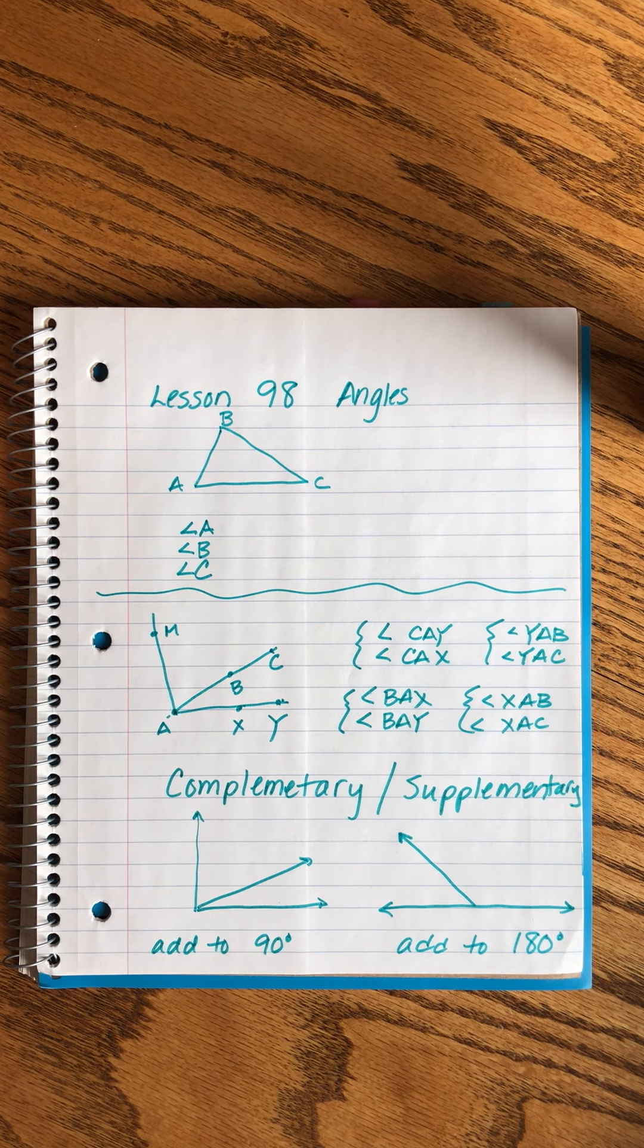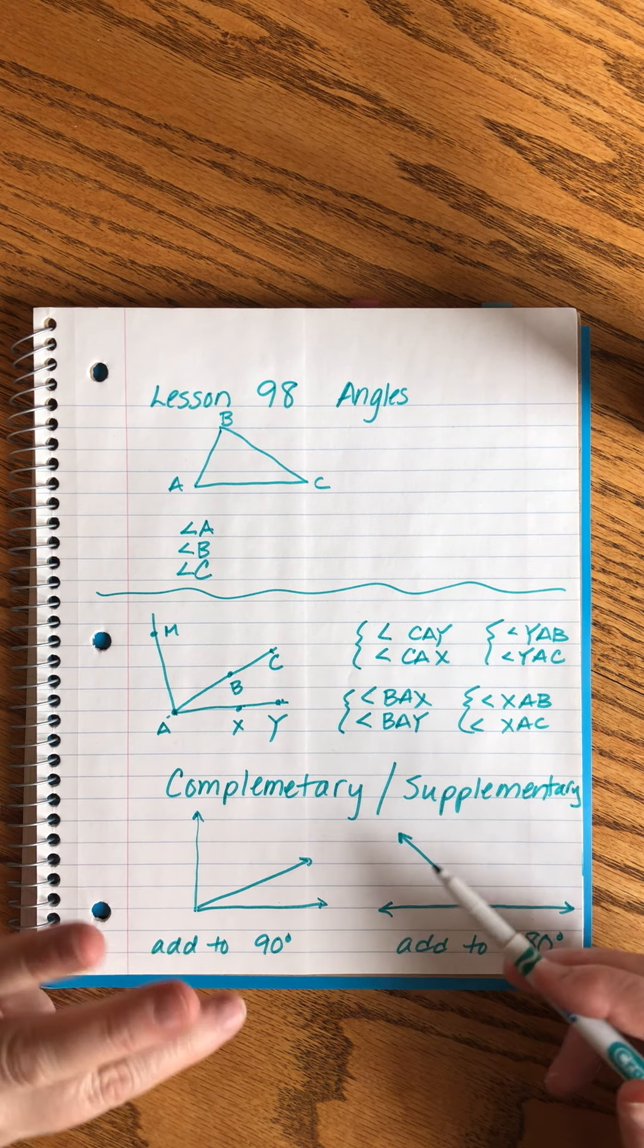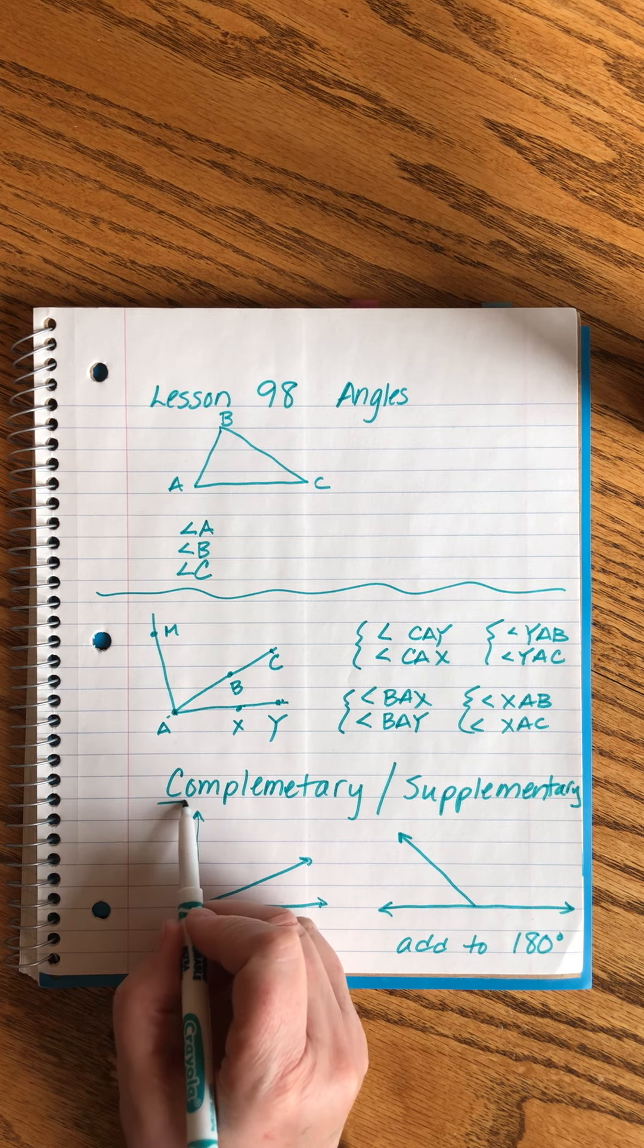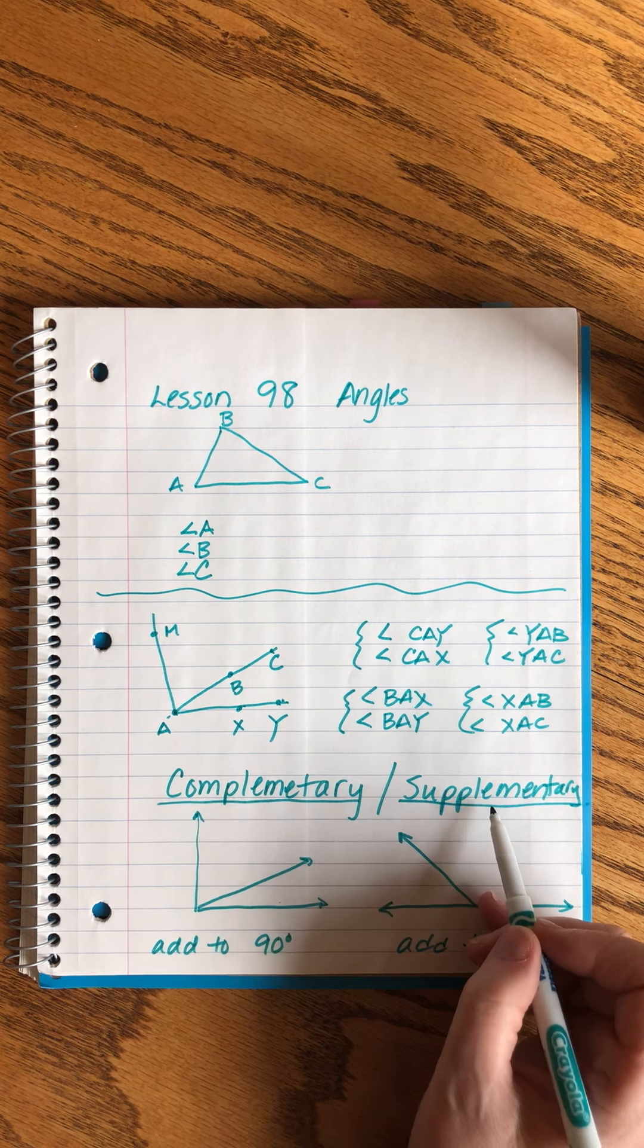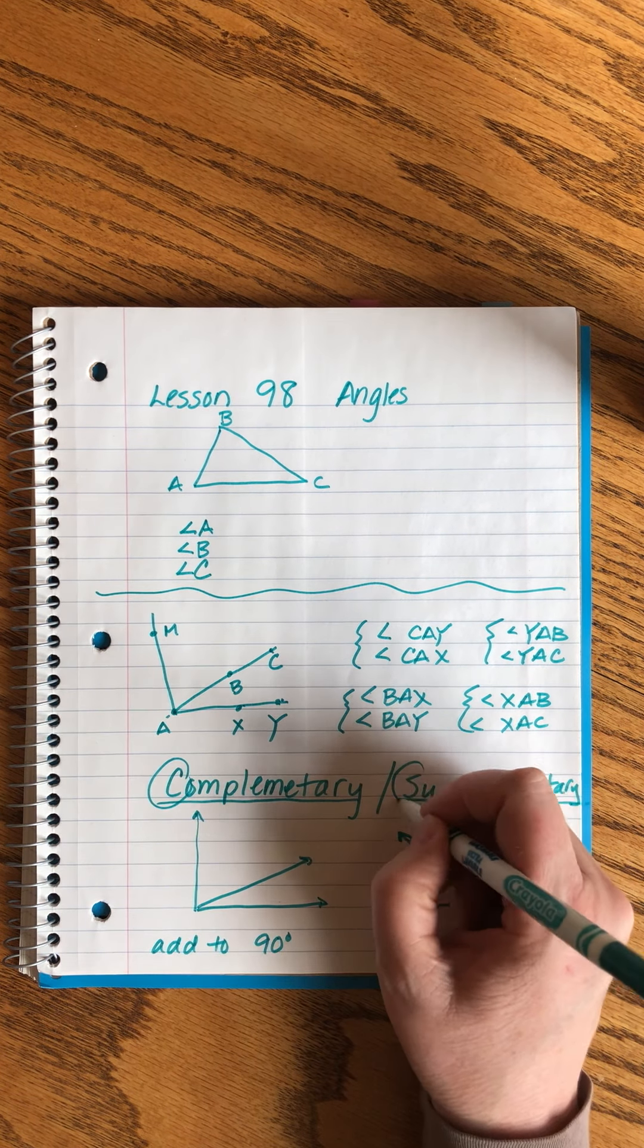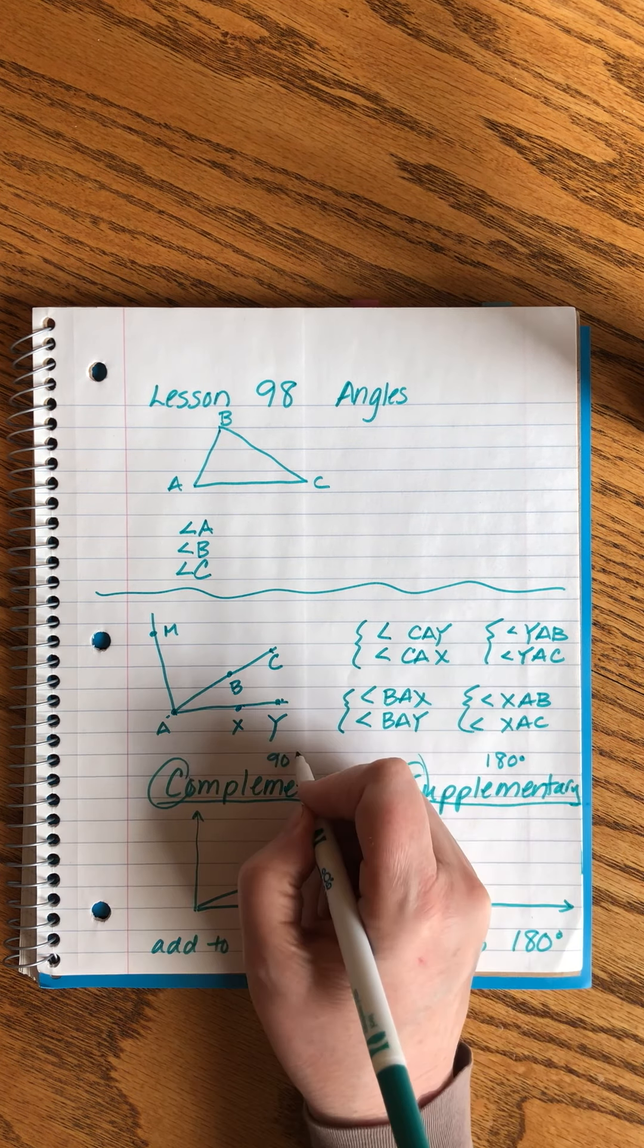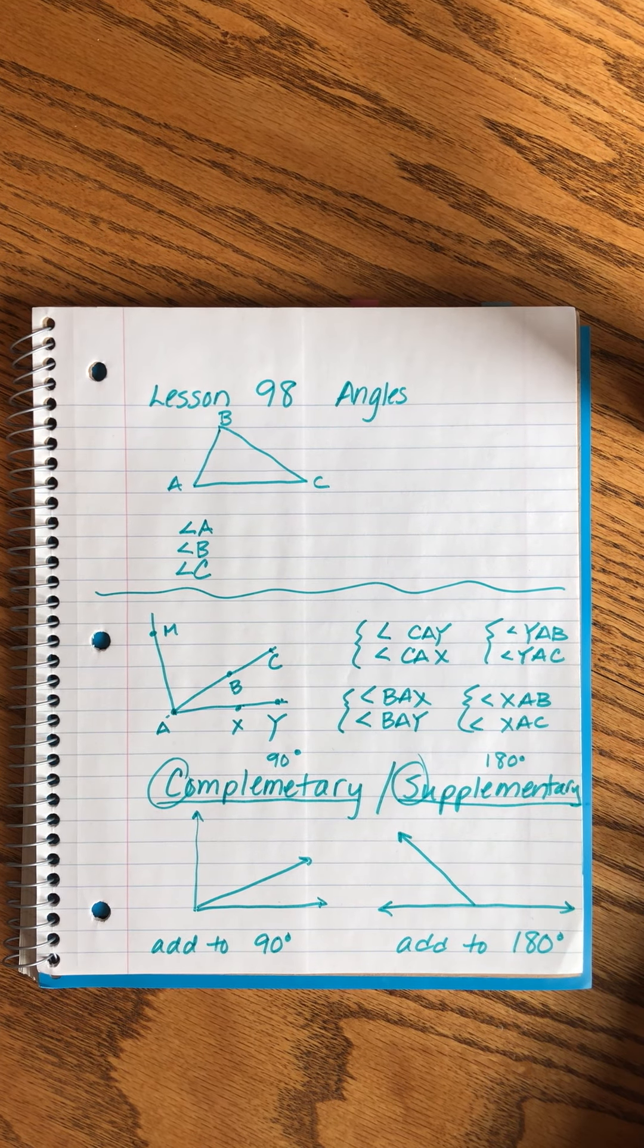And these are super useful for algebra problems because we can use that information to calculate different things. Now, the trick is everybody forgets which one is the 90 degrees and which one is the 180 degrees. Here's how I remember it. Alphabetically, C comes before S and numerically, 90 comes before 180. So, to me, that's the little trick.